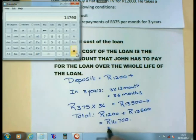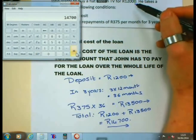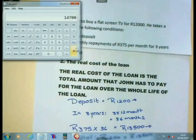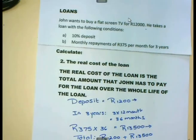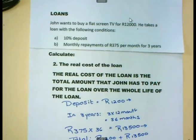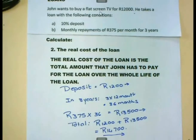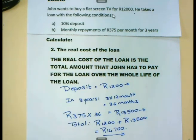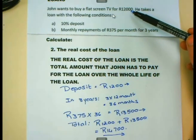Why did John end up paying more for the TV than it originally cost? The reason is that when we take a loan or borrow money, we need to pay the lender certain compensation for the privilege of using their money. Being able to have the TV now and pay over a longer period of time simply means that at the end of the day you will end up paying more than if you had paid cash.